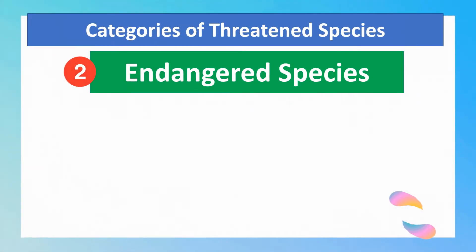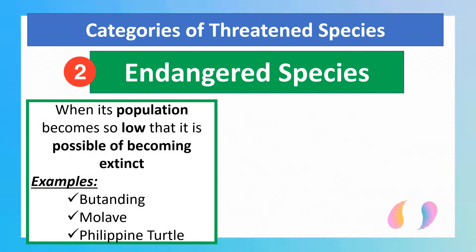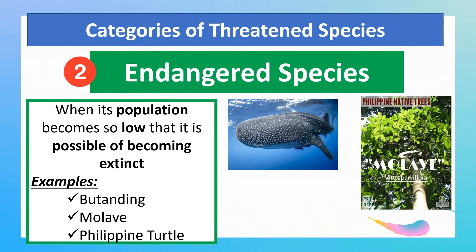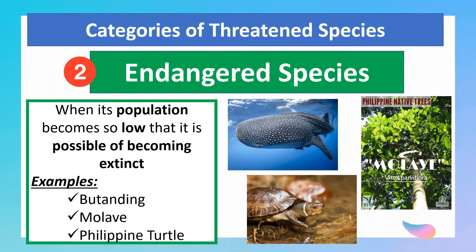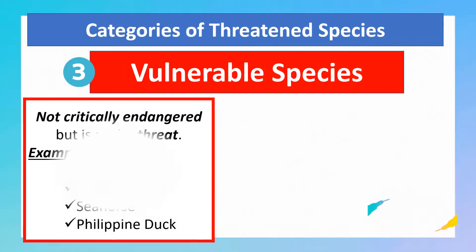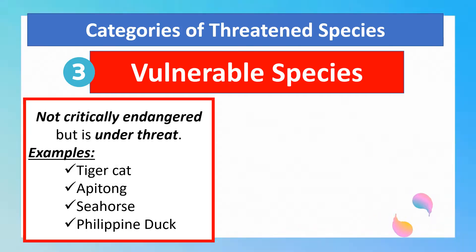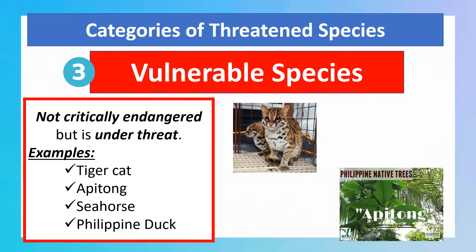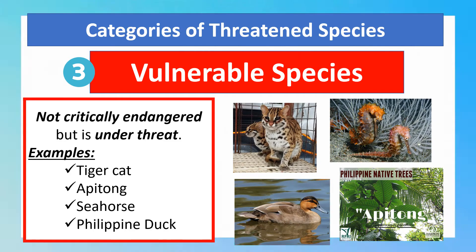The next category is endangered species. When a species' population becomes so low that only a few remain, it is considered endangered and will possibly become extinct. Examples are the butanding, the mulave tree, and the Philippine turtle. Lastly, we have vulnerable species — those that are not critically endangered but are under threat. Some examples are the tiger cat, the pitong tree, the seahorse, and the Philippine duck.